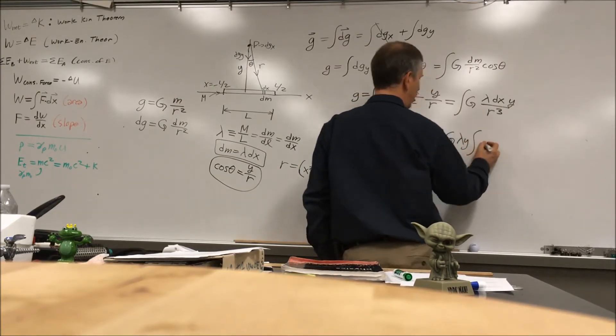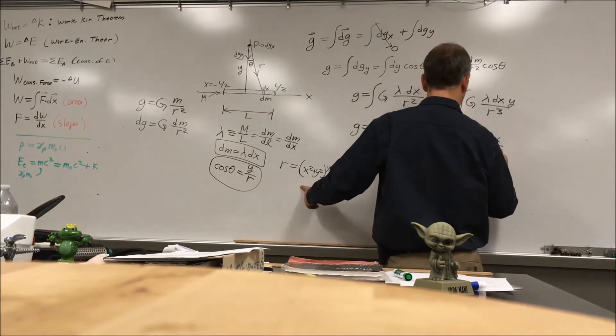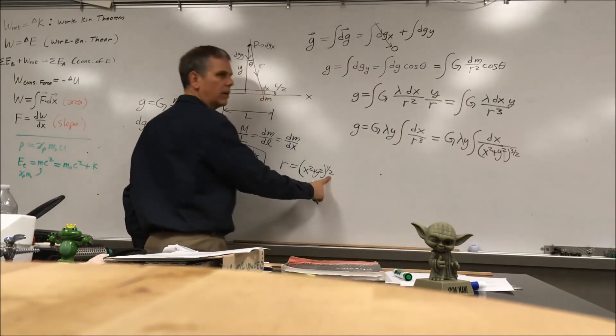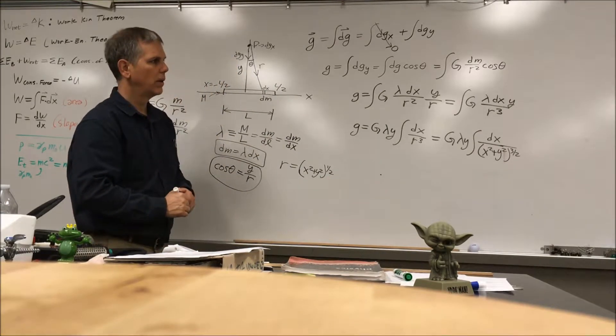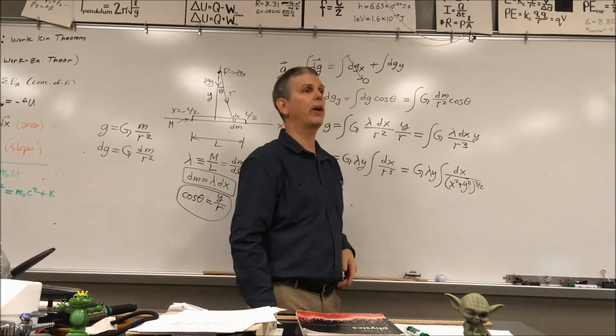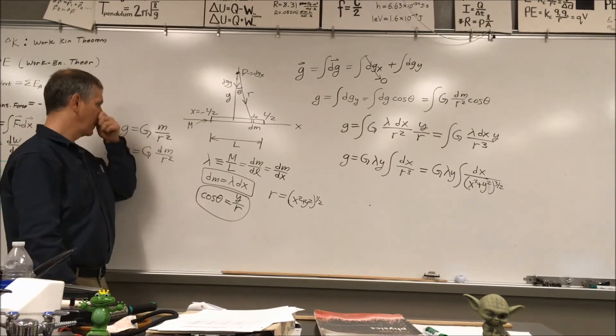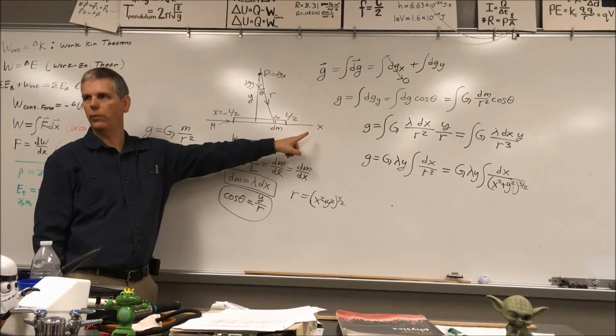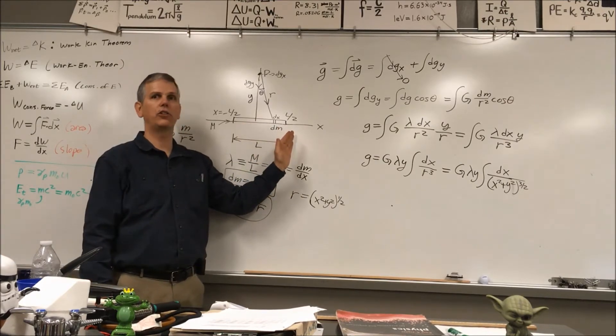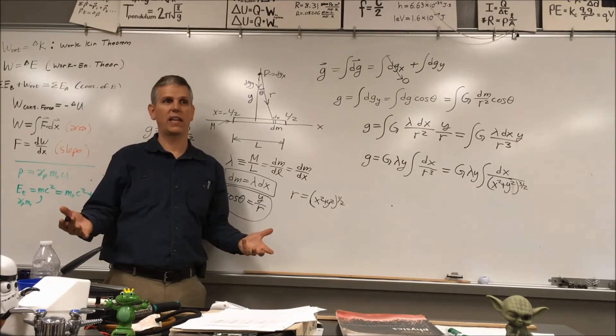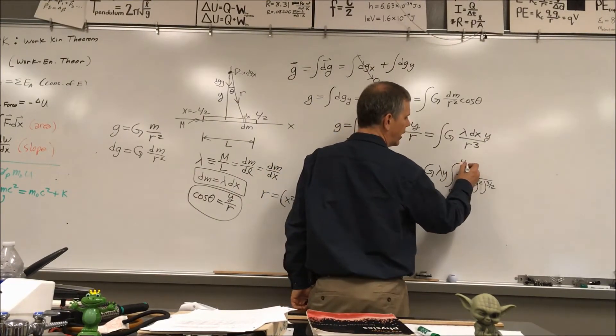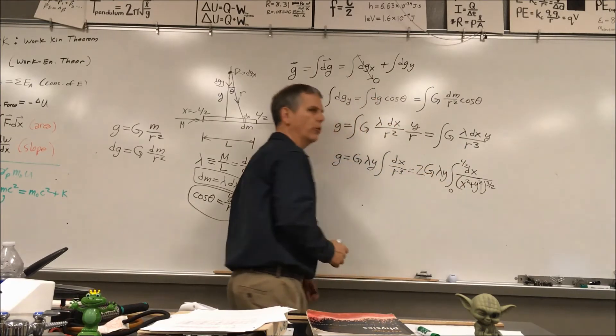G lambda y integral dx over x squared plus y squared to the three halves. Because one half times one half times one half gives me three halves. Now that we've got the setup, we did all of that to get little dg that we're going to integrate. But we're missing something. We're going to integrate from some place to some place. We could go from negative L over 2 to positive L over 2, couldn't we?